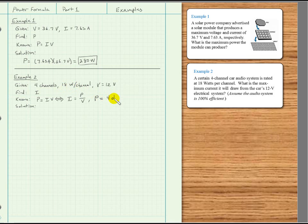The channels as unit cancel leaving us with watts as unit, so we'll get power equal to 4 times 18, which is 72 watts.